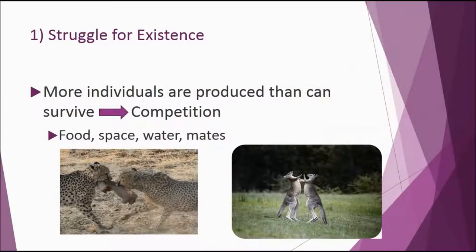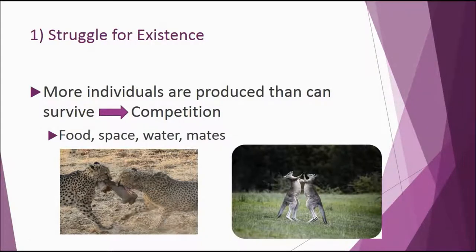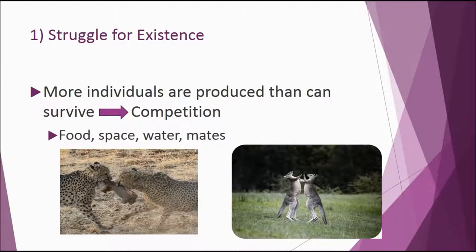The first thing, which you probably know coming into the class, is that there's always a struggle for survival. In any population there are always more individuals born than can survive, and that leads to competition. That competition can be between animals of the same species — something called intraspecific competition. You typically see these animals fighting for food, territory, any type of resource, or even fighting over mates. That all provides competition, and it's very important when it comes to natural selection.